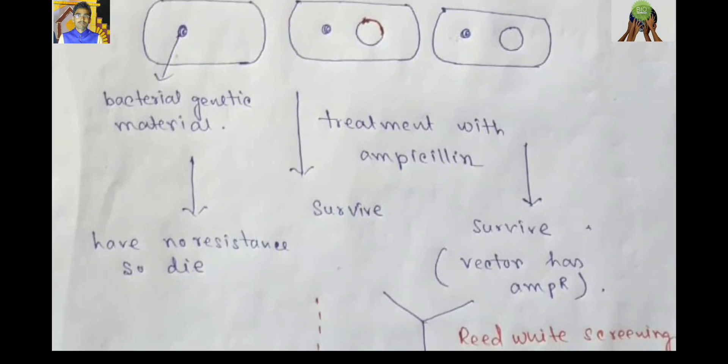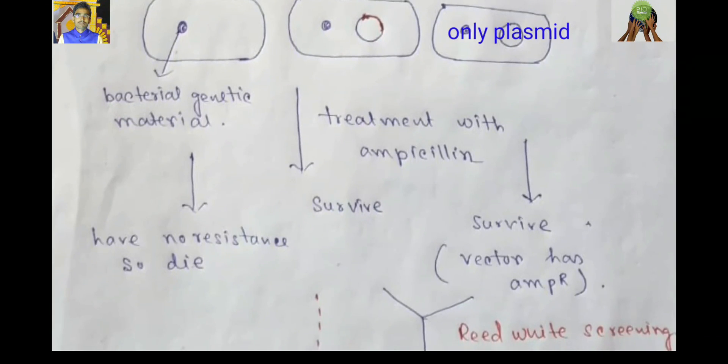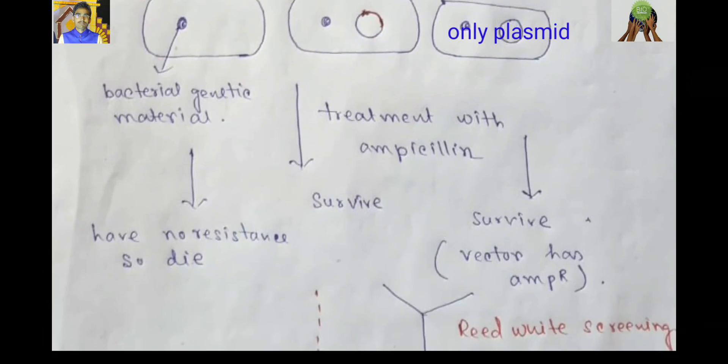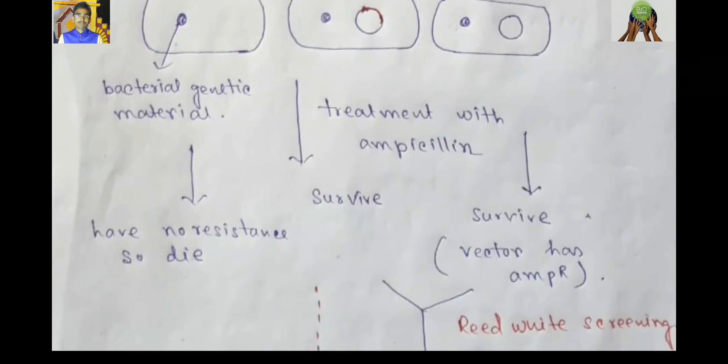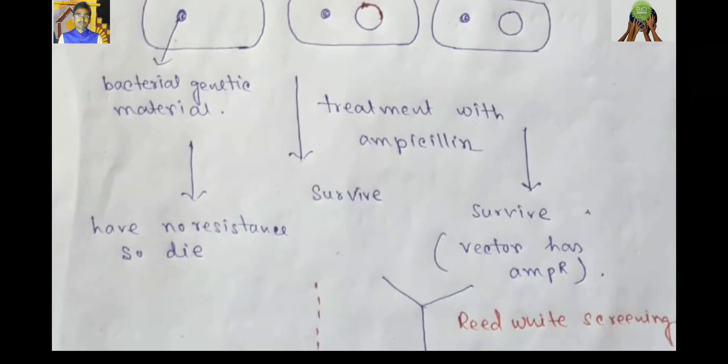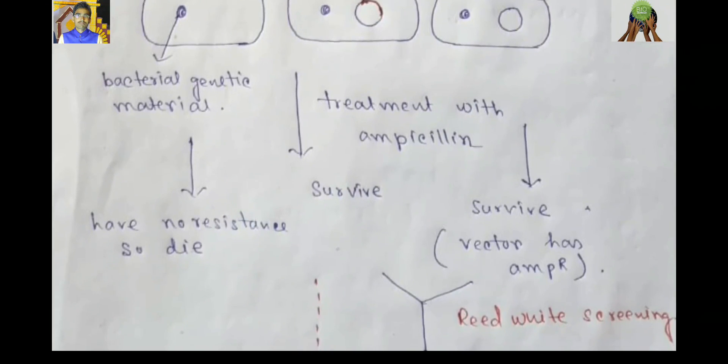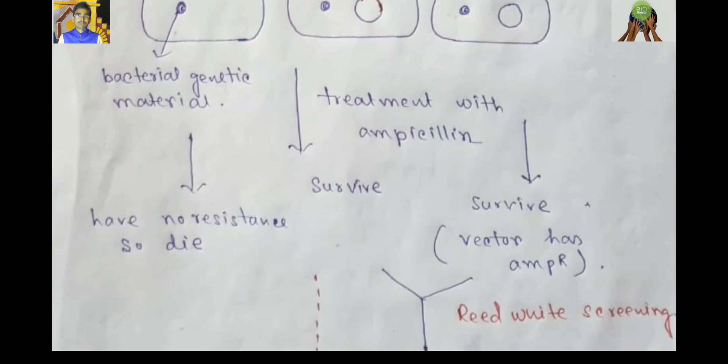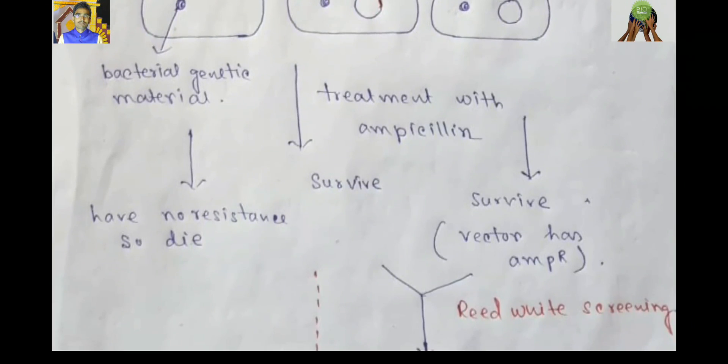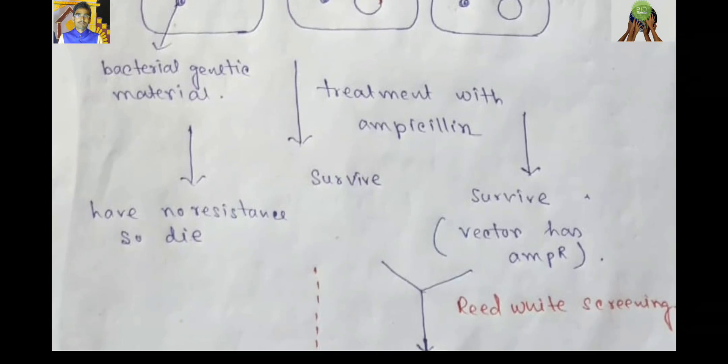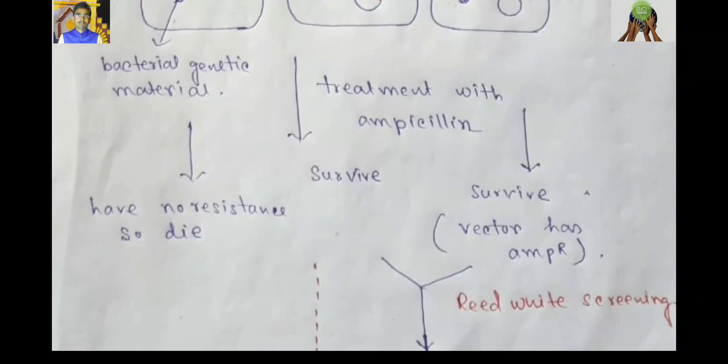Here, only the plasmid vector enter. As there is no obstacle for the plasmid vector to enter into a host cell, so it can enter.